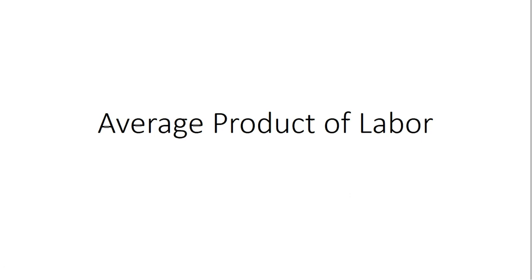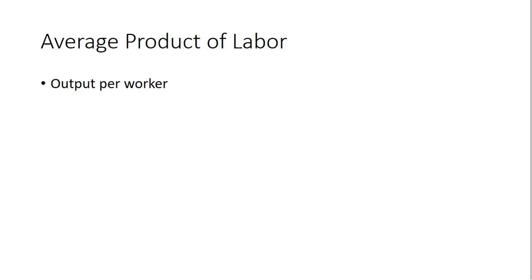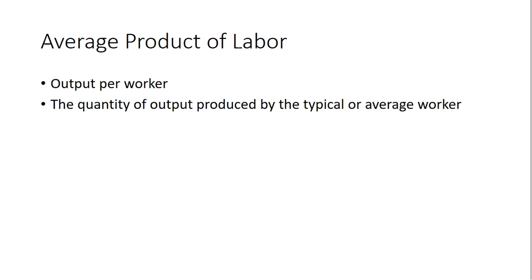Hello. In this video we're going to look at the average product of labor and try to find where average product of labor is maximized. Average product of labor is output per worker, or the quantity of output produced by the typical or average worker. It equals the quantity of output divided by units of labor.